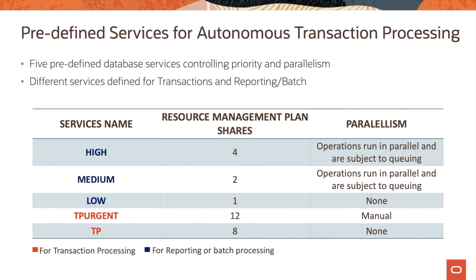Let's now look at predefined services for autonomous transaction processing connectivity. There are five predefined database services controlling priority and parallelism, with different services defined for transactions and reporting. As with autonomous data warehouse, we have high, medium, and low services with similar characteristics. In addition, there are two more services: TP Urgent and TP.